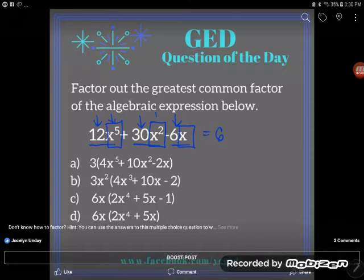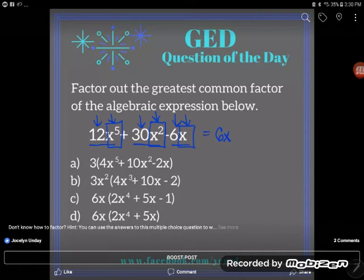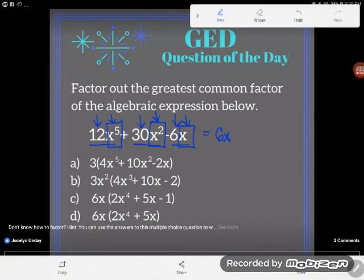This guy has five x's multiplying, this guy has two x's multiplying, but this guy only has one x. And so he only has one x to spare. So the greatest number of x's that they have in common is just one. So I could pull out that 6x.